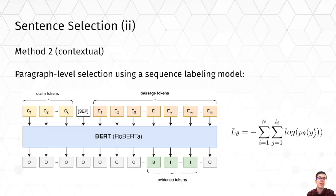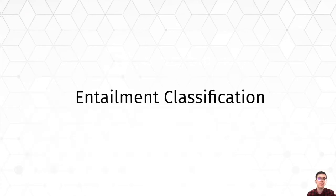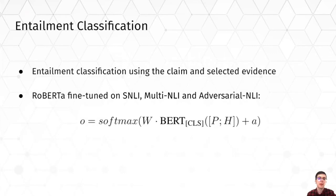We train a model based on RoBERTa-Large by minimizing the cross-entropy loss. Our QINPlus system also utilizes a natural language inference model based on RoBERTa-Large with a linear transformation of the CLS token embedding. The entailment model was trained on the concatenation of three popular NLI datasets by minimizing the cross-entropy loss.